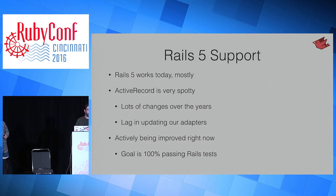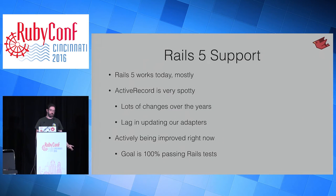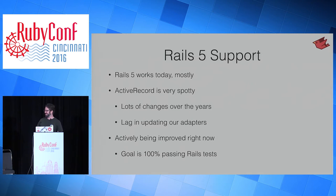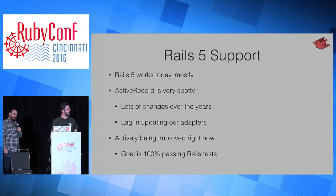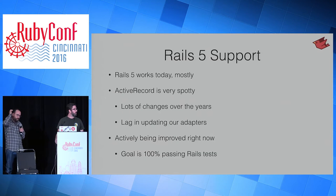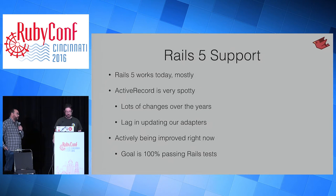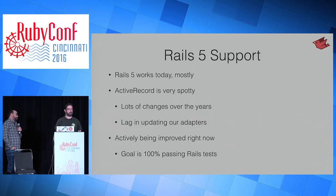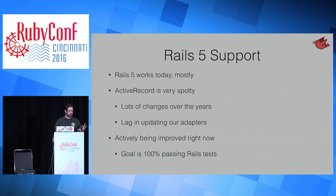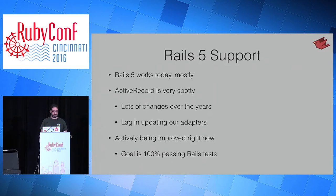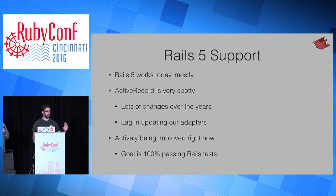I'm going to talk about where we stand on Rails 5 support. JRuby has supported Rails for years — I think we first ran it successfully in 2006. We've run Rails in some capacity for 10 years, and there are hundreds, maybe thousands of applications out there running Rails on JRuby. We had a lot of work to do on JRuby 9000, so we didn't get a lot of time to work on Rails 5 support. The answer is that Rails 5 today works mostly. You can take existing JRuby database adapters, plug them into a Rails app, and most things will generally work. But ActiveRecord is the spottiest part. Most of Rails is just pure Ruby and doesn't interact with native libraries — that stuff's all fine. So if you're using Rails without ActiveRecord, Rails 5 on JRuby is probably just fine.